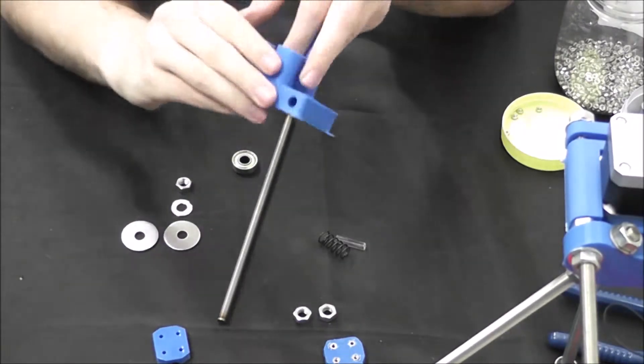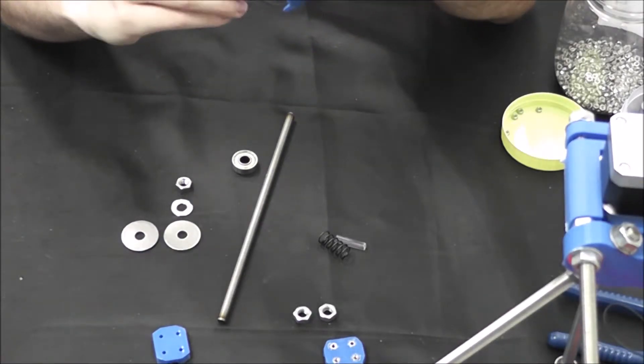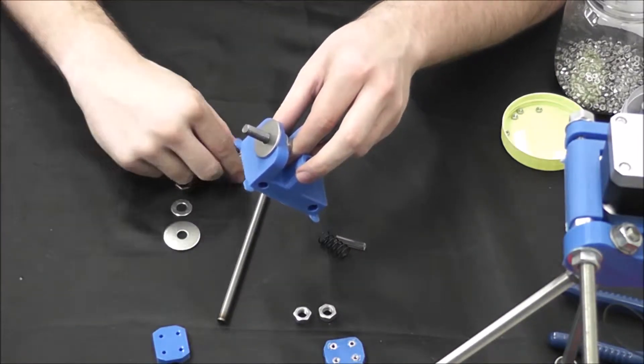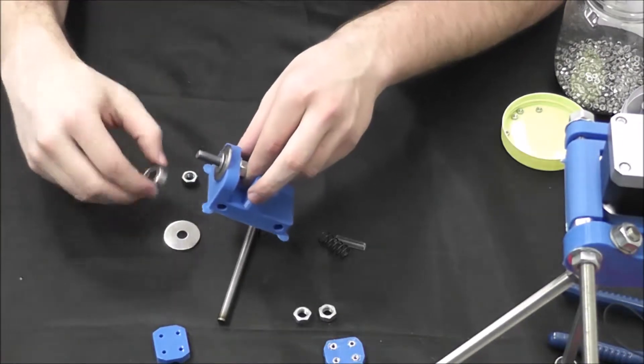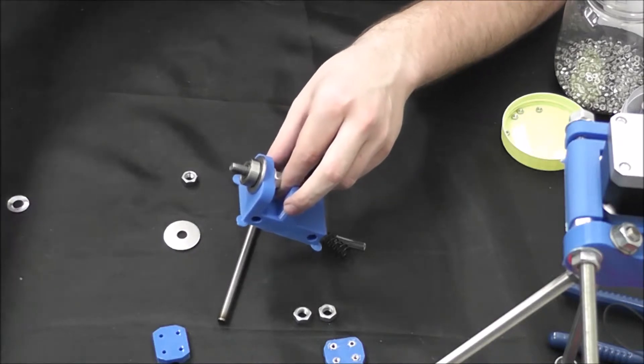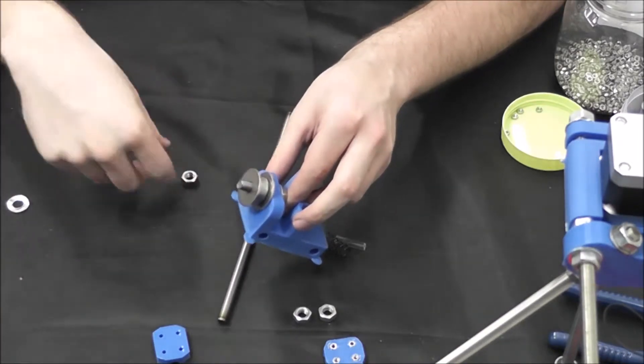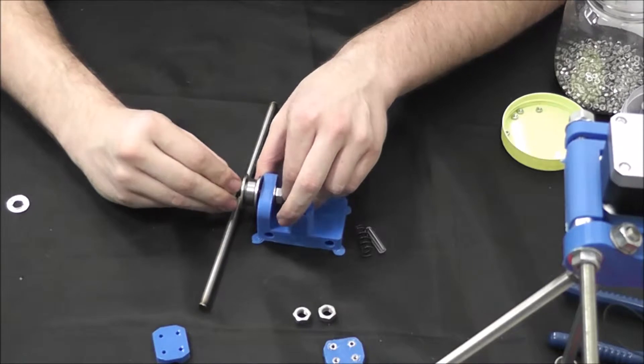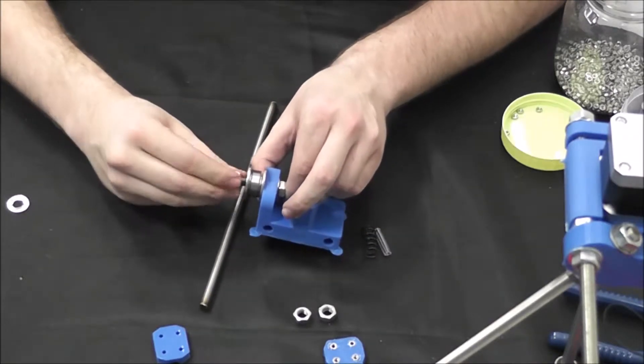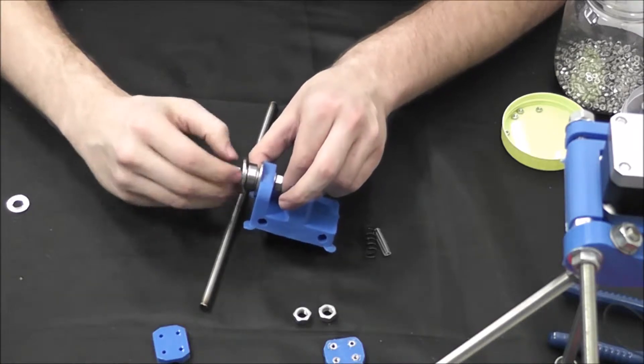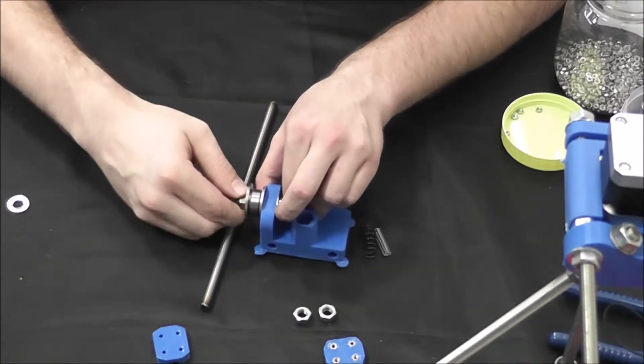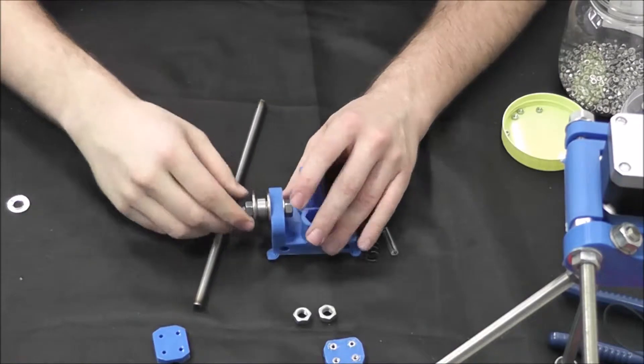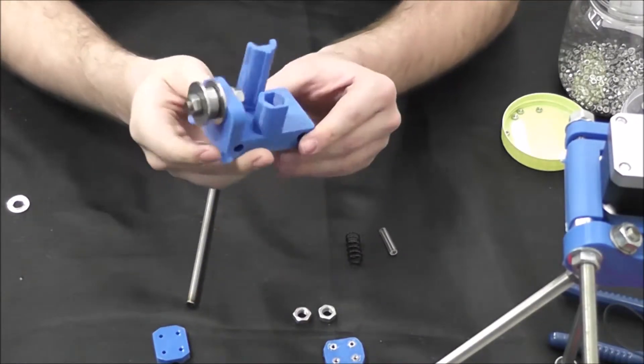Now next we are going to put a fender washer right there, an M8 washer, bearing, another M8 washer, fender washer, and M8 nut. We're going to tighten this up so it is against the idler. Once we put it on the axis, it should basically mount up or align perfectly with the pulley on the other end. We'll finger tighten that for now. The bearing should still roll smoothly. Your bearing is attached to your X idler.